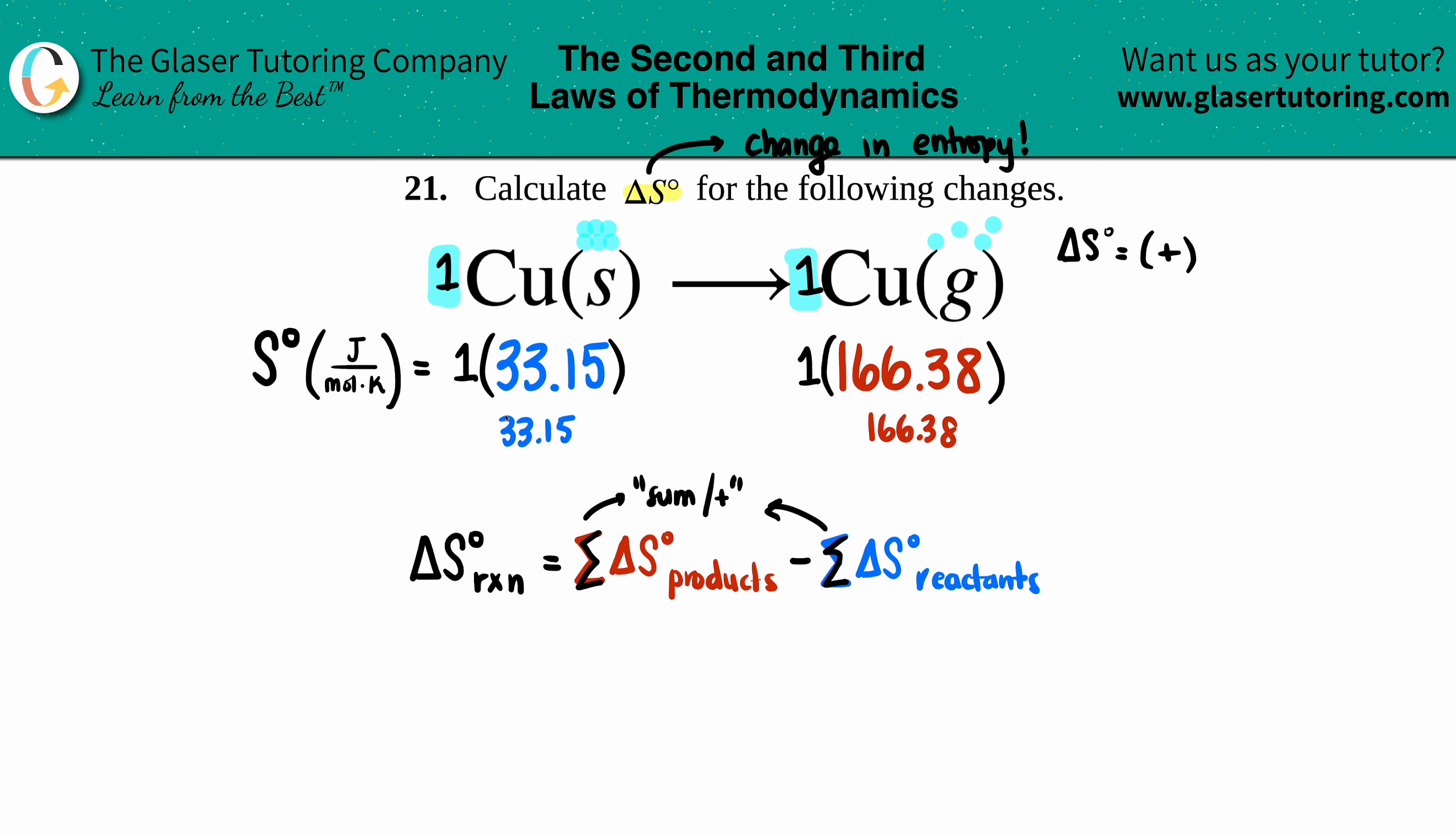Now we're just going to take the total values and plug them in. So the delta S for my whole reaction would be the product - there was only one of them - so 166.38, and I'm just going to subtract the 33.15.